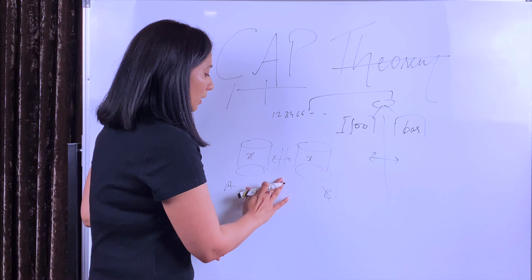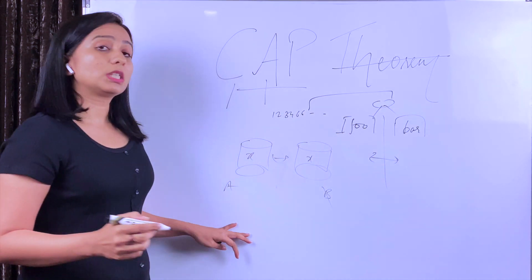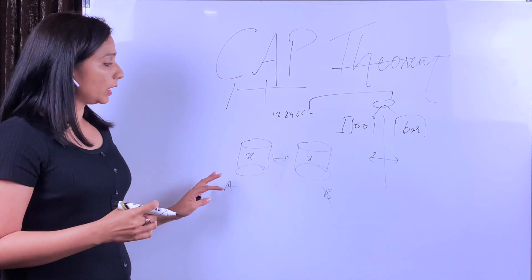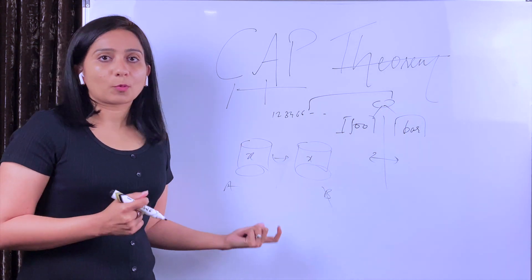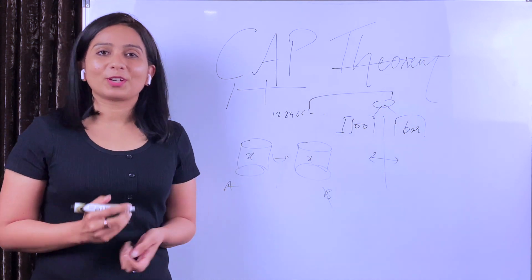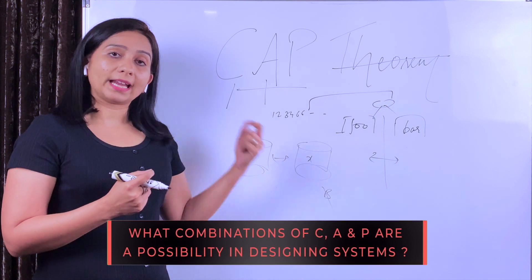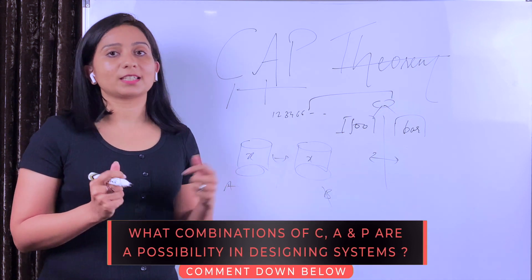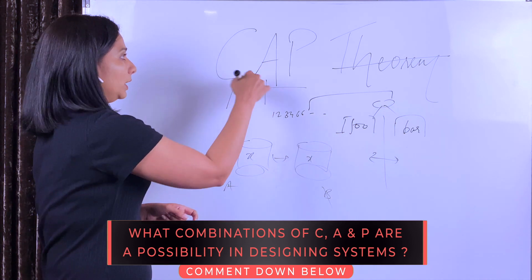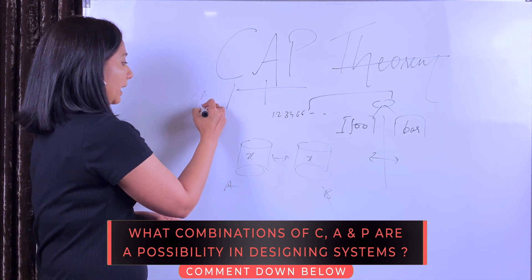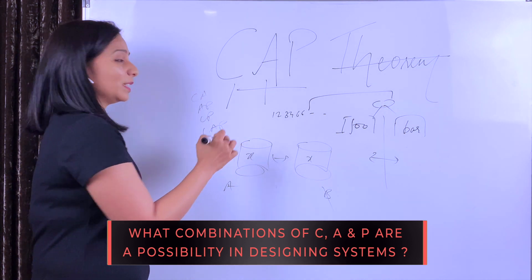We assume that a network partitioning never happens, these two machines are always connected, and then we have a consistent, highly consistent and highly available system. Is that possible? Do you think it is possible? Let me know in comments whether it is possible for a system to be highly consistent and highly available at the same time, or which combination you think of these three, CA, AP, or CP, or CAP is possible.